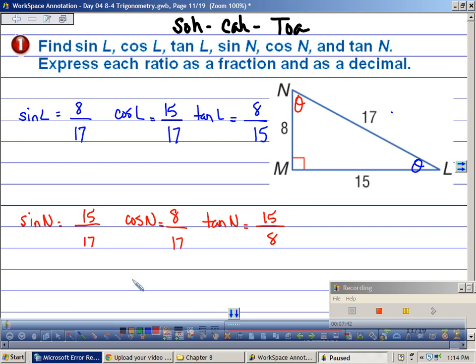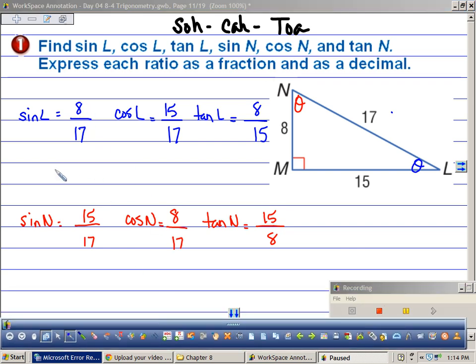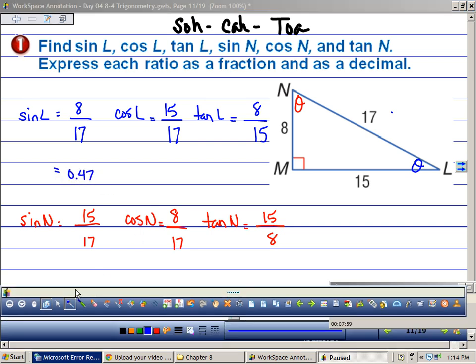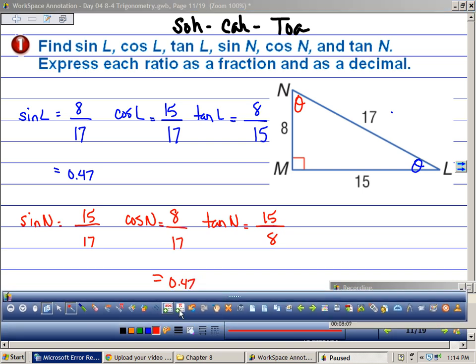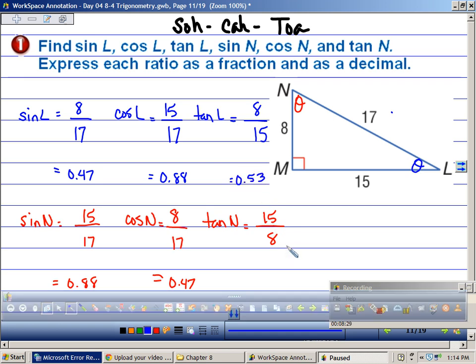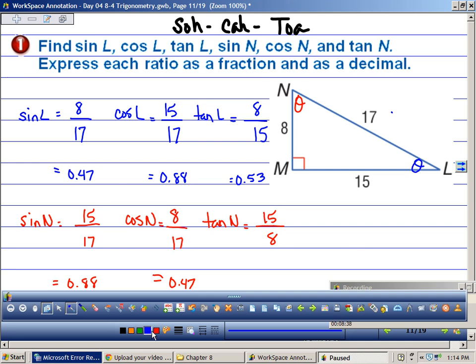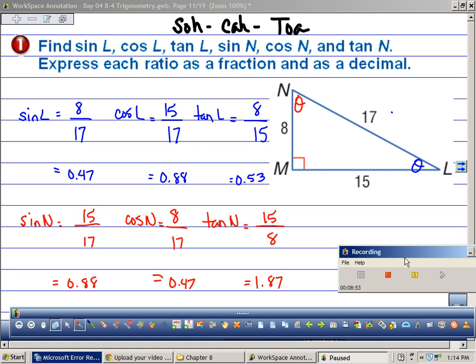And I've already put these in a calculator. When I put 8 over 17 in a calculator, I get 0.47, which is kind of convenient because it's also the cosine of N as well. Now 15 divided by 17 equals 0.88. We also have a 15 over 17 over here. So I'm going to kill two birds with one stone. Finally, 8 over 15 is 0.53. And these don't match. But look, they are inverses of each other. I wonder if that has anything to do. Is that just coincidence? I think not.